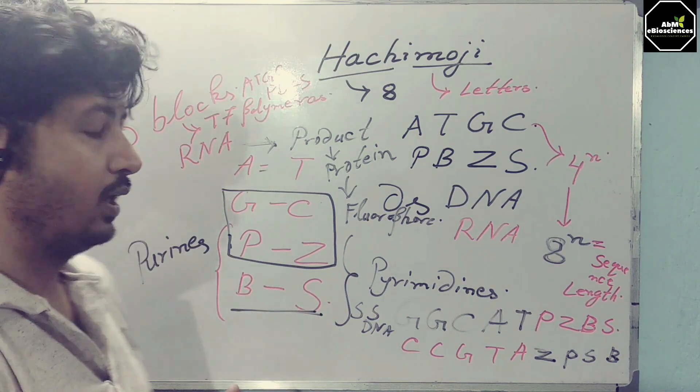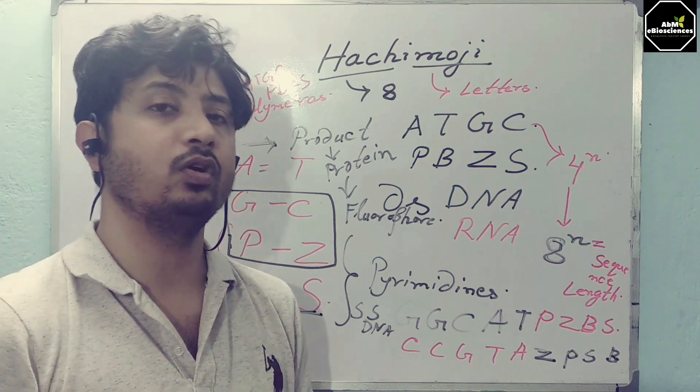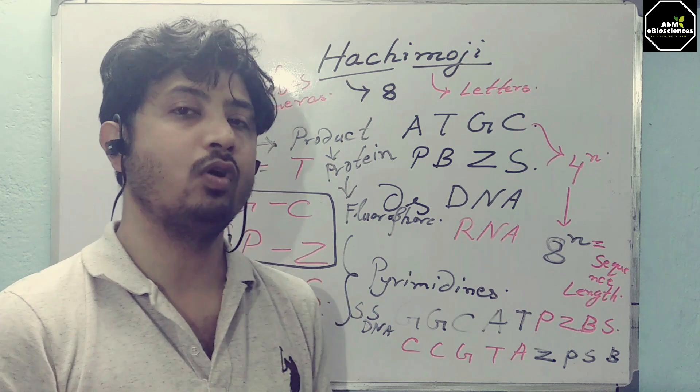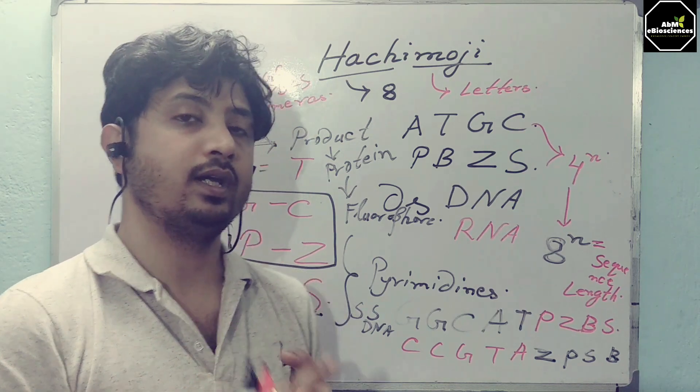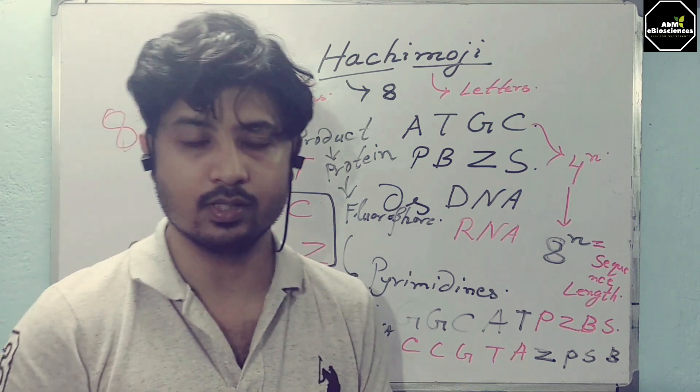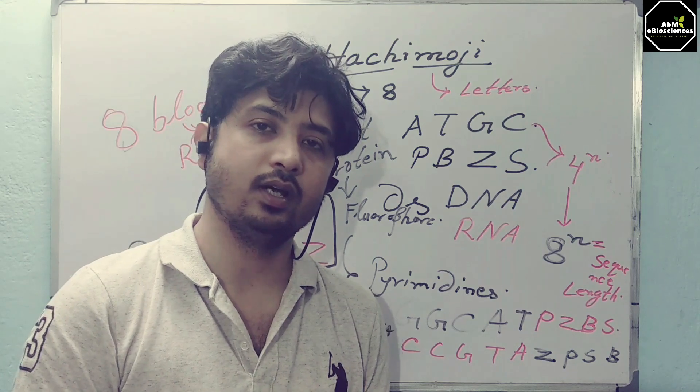Here, one thing I want to say: T7 RNA polymerase is used here, not normal RNA polymerase. The normal RNA polymerase is not able to understand the sequence of these 8 blocks. So they have shown this with T7 RNA polymerase. That is a really good thing to understand in this study.